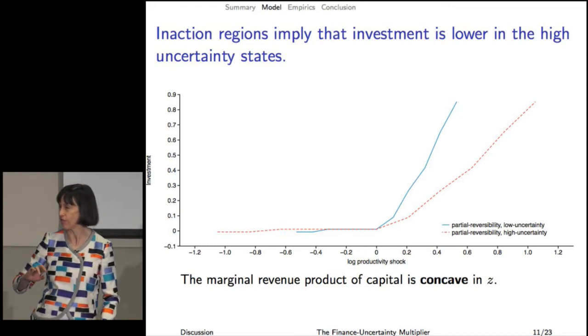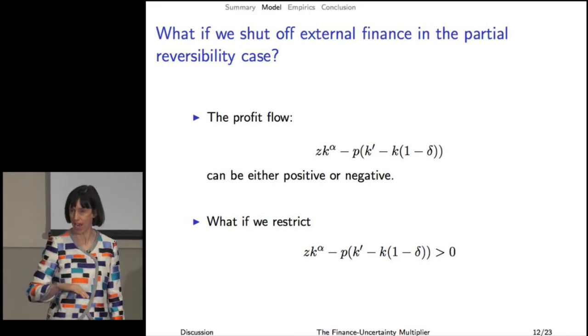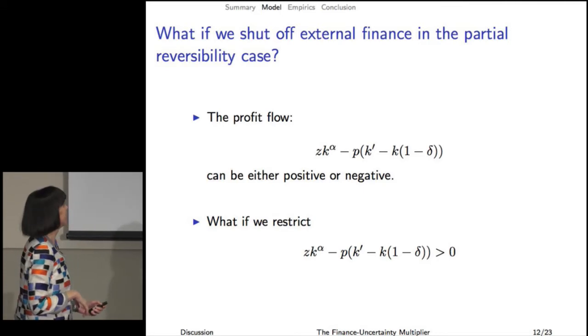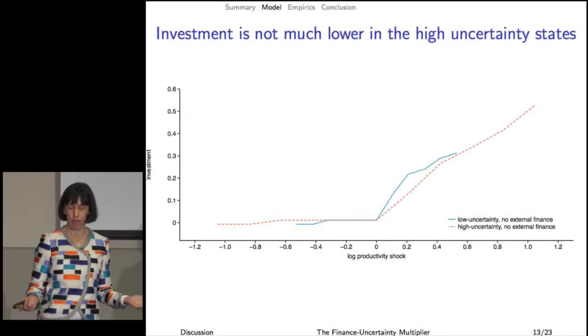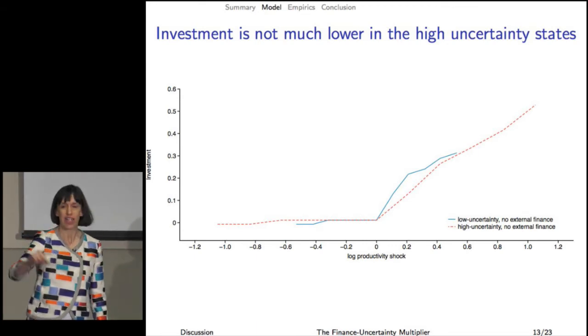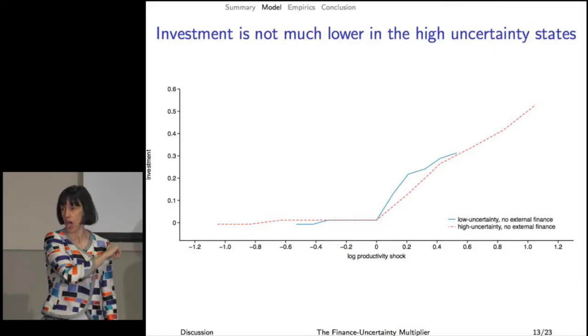Up to now we have no financing and no financial frictions. Let's add a nice big financial friction — let's shut off external finance. So the profit flow was just profits minus investment, and let's just restrict that to be positive. It looks like that. It doesn't look like a finance-uncertainty multiplier; it looks a little bit like the opposite. In the low uncertainty states, the firm never wants to invest so much that it has to tap external finance, so the optimal policies look the same. In the high uncertainty states, the firm does invest enough that it might want to tap external finance, but that's cut off. So the blue line starts to go up the nice steep path and then hits the constraint and peters out. That's not an investment-uncertainty multiplier — it's an anti-multiplier, a divisor. That's not what's going on in their model.